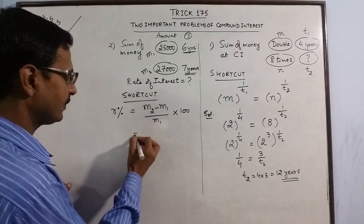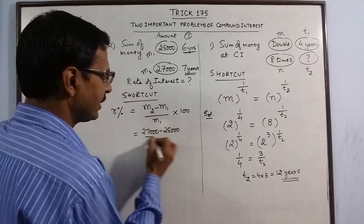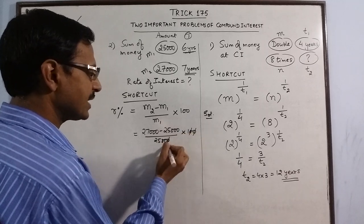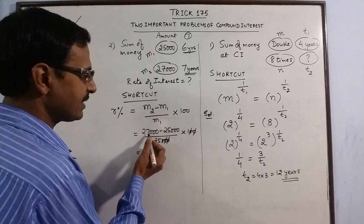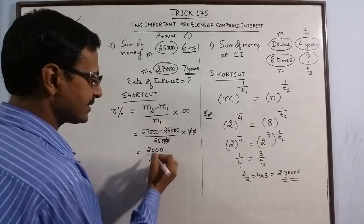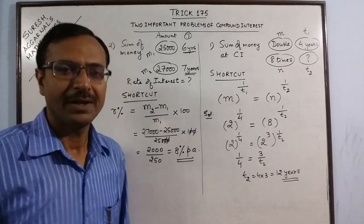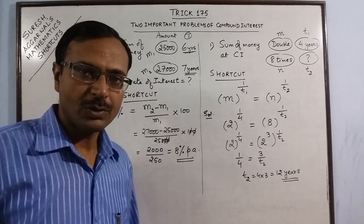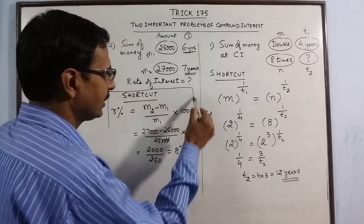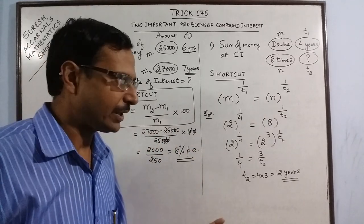Now just substitute the values. M2 is 27,000 and M1 is 25,000, divided by 200 — two zeros cancel out. 27,000 minus 25,000 is 2,000, divided by 250. So exactly 8 percent per annum is your rate of interest. No formulas, no complicated calculations — just the knowledge of one little shortcut and you will be able to solve the problem in a matter of 4 to 5 seconds.